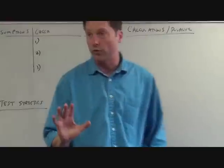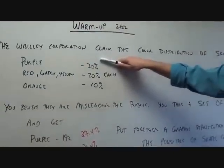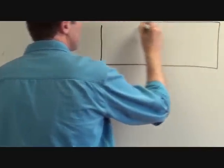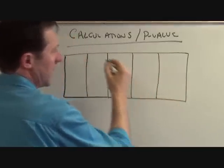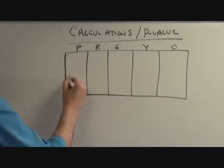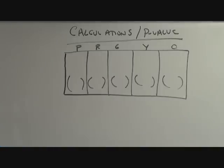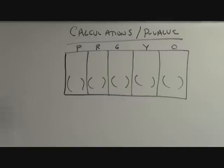So how do we go through this process? Bottom line — here's what we're trying to figure out: is what we got significantly different from what we were expecting in order to call the company a liar based on our sample? We're going to compare what we got versus what we were expecting. Draw a box and break it into five different categories: purple, red, green, yellow, and orange. In the lower part of the box, put parentheses — I'll explain that in a minute.